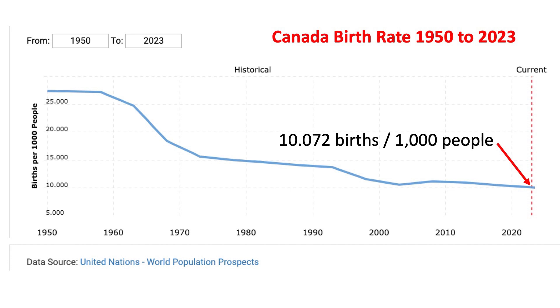Look at that graph. In 1958, the birth rate was 27.2 births per 1,000 people, and today it is 10.07 births per 1,000 people. That means the birth rate has dropped by 63% over the past 65 years. That is an average of nearly 1% per year for six and a half decades. Obviously, we don't know what the birth rate in Canada will be for 2024, so can we just use the 2023 number?